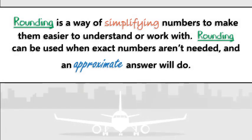Rounding is a way of simplifying numbers to make them easier to understand or work with. Rounding can be used when exact numbers aren't needed, and an approximate answer will do.